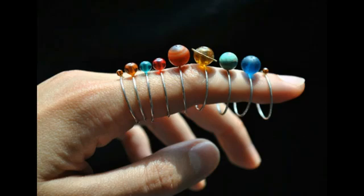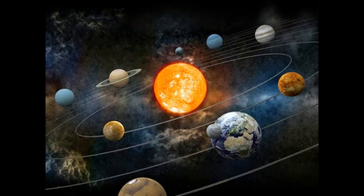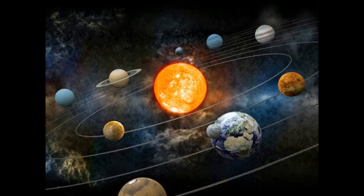Jupiter, with an effective temperature of minus 234 degrees Fahrenheit, minus 148 degrees Celsius, is the largest planet in our solar system. It has 50 moons and three rings.